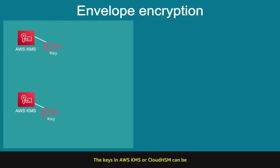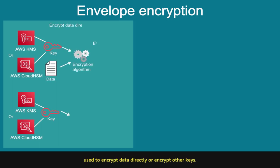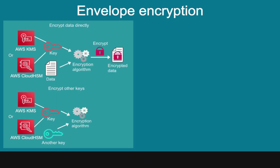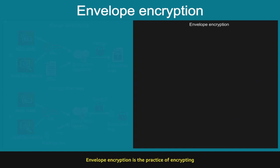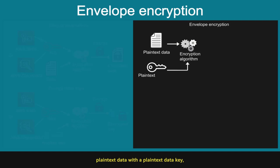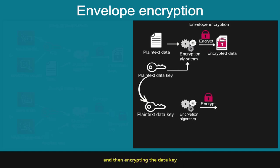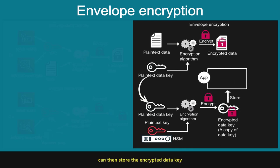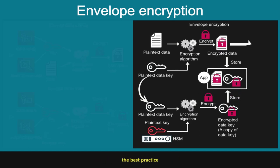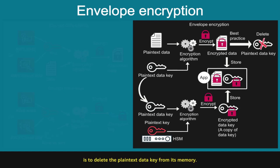The keys in AWS KMS or Cloud HSM can be used to encrypt data directly, or encrypt other keys. Envelope encryption is the practice of encrypting plaintext data with a plaintext data key, and then encrypting the data key under another key. In the HSM, the plaintext key is used to encrypt a copy of the data key. The application can then store the encrypted data key with the encrypted data. Once the application encrypts the data, the best practice is to delete the plaintext data key from its memory.